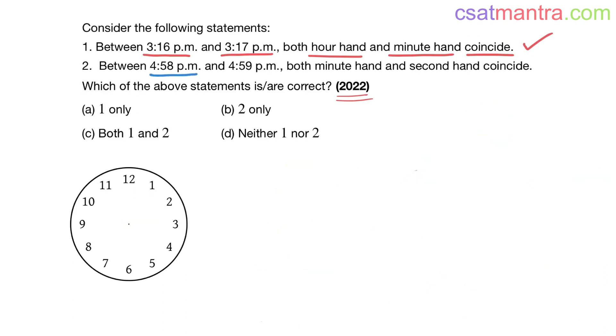Now between 4:58 PM and 4:59 PM, both minute hand and second hand, this time it's minute and second hands my friends, they coincide. For this you don't have to solve. When it is 4:58 PM, minutes hand will be at here, right, 4:58 PM, and seconds hand will be here, hours hand somewhere here, and minutes hand here, and seconds hand here, 4:58 PM.